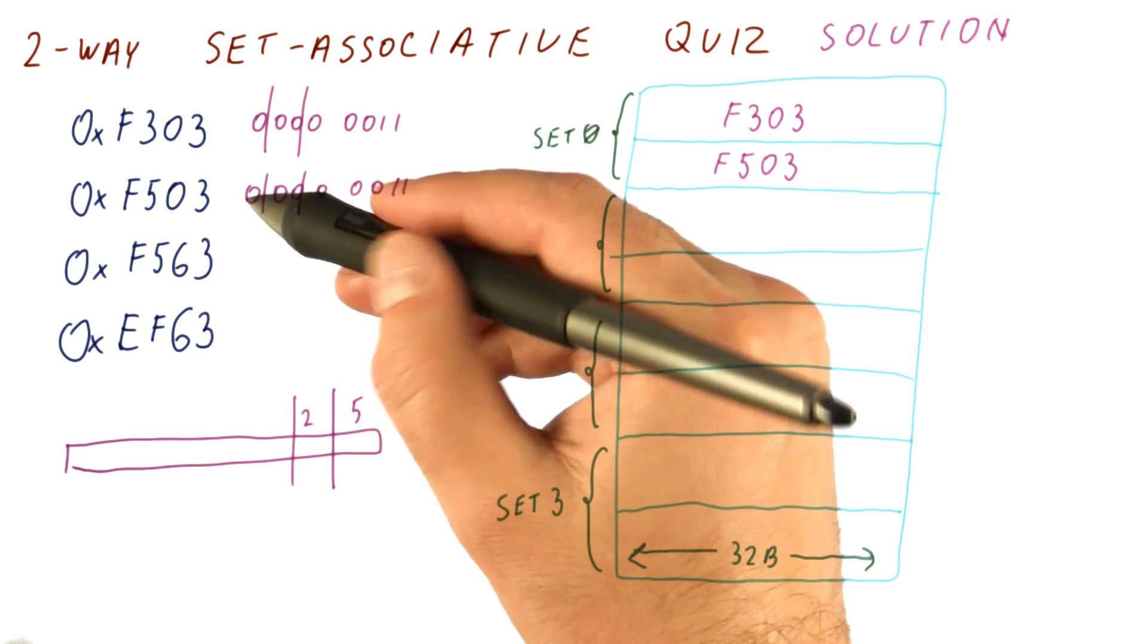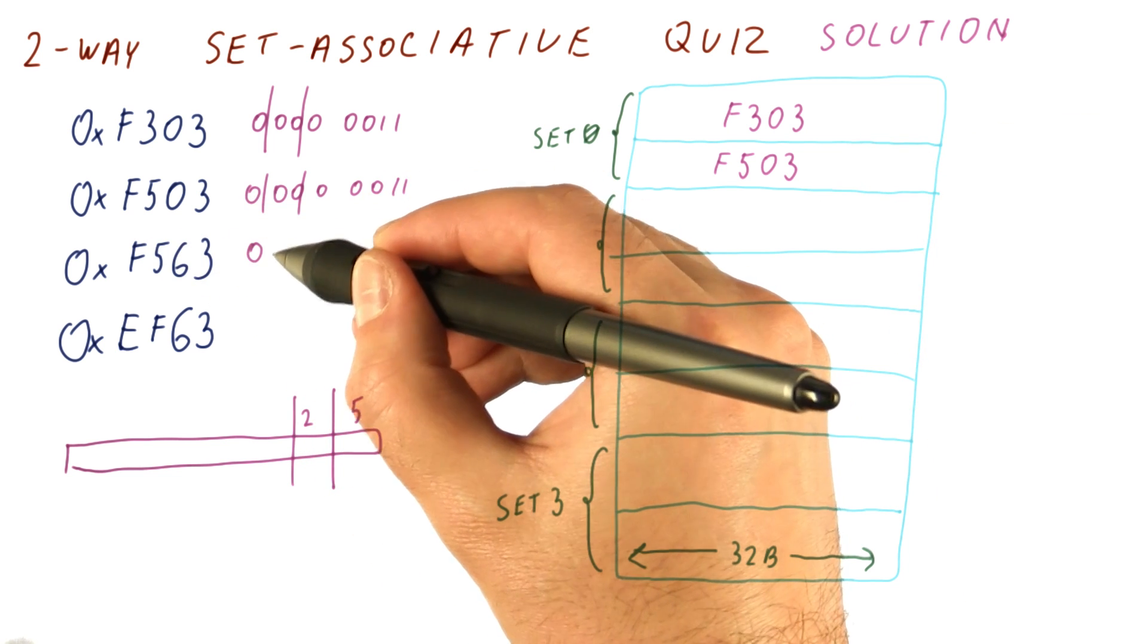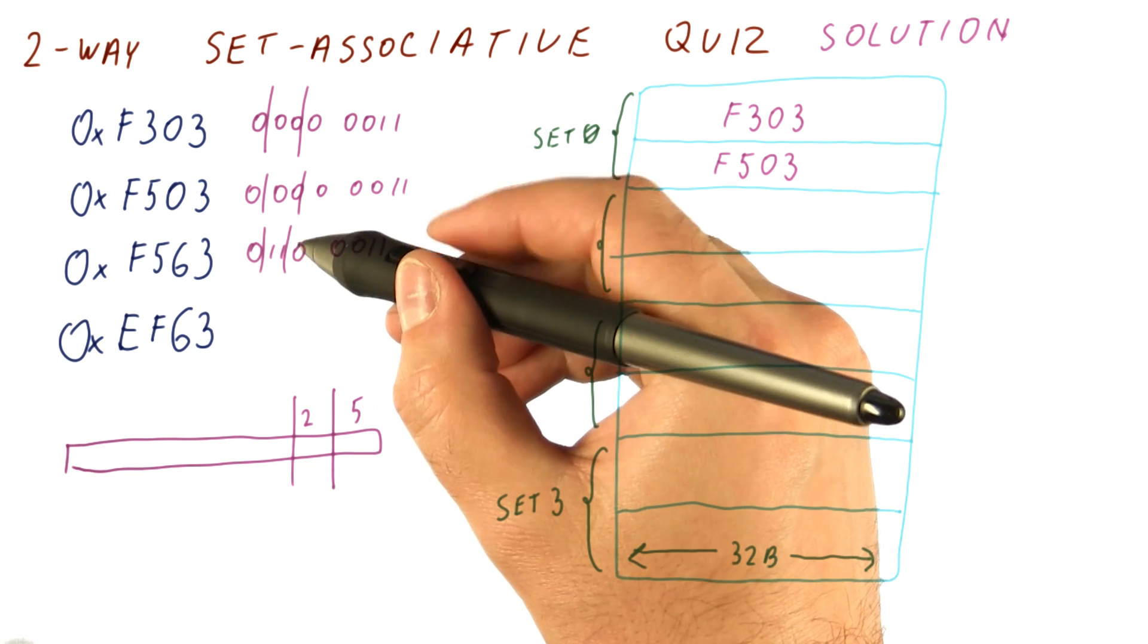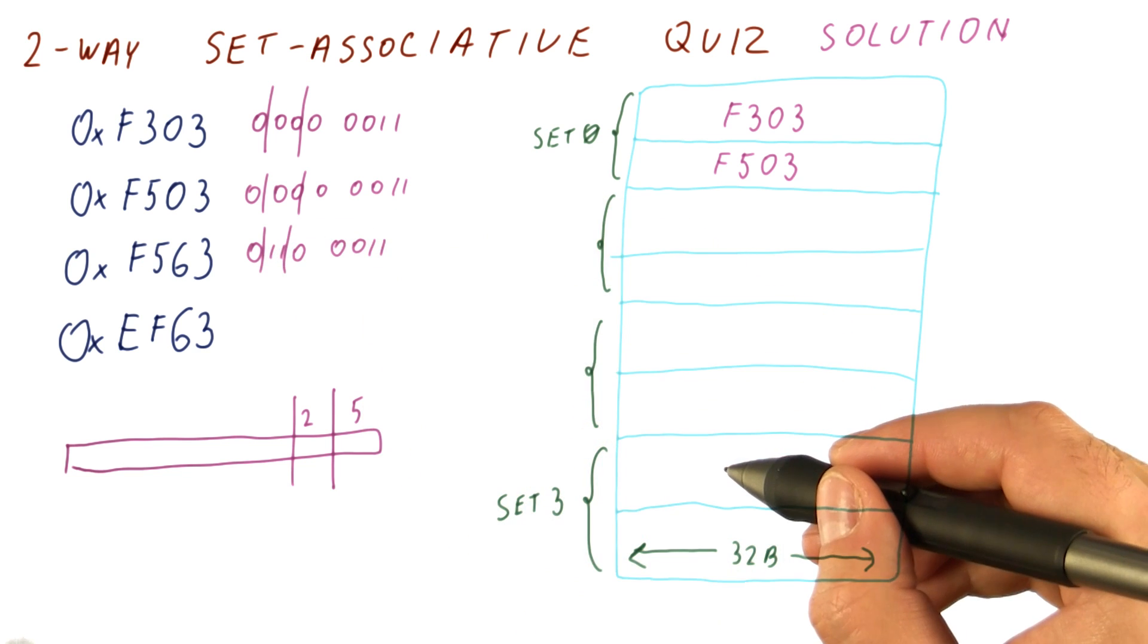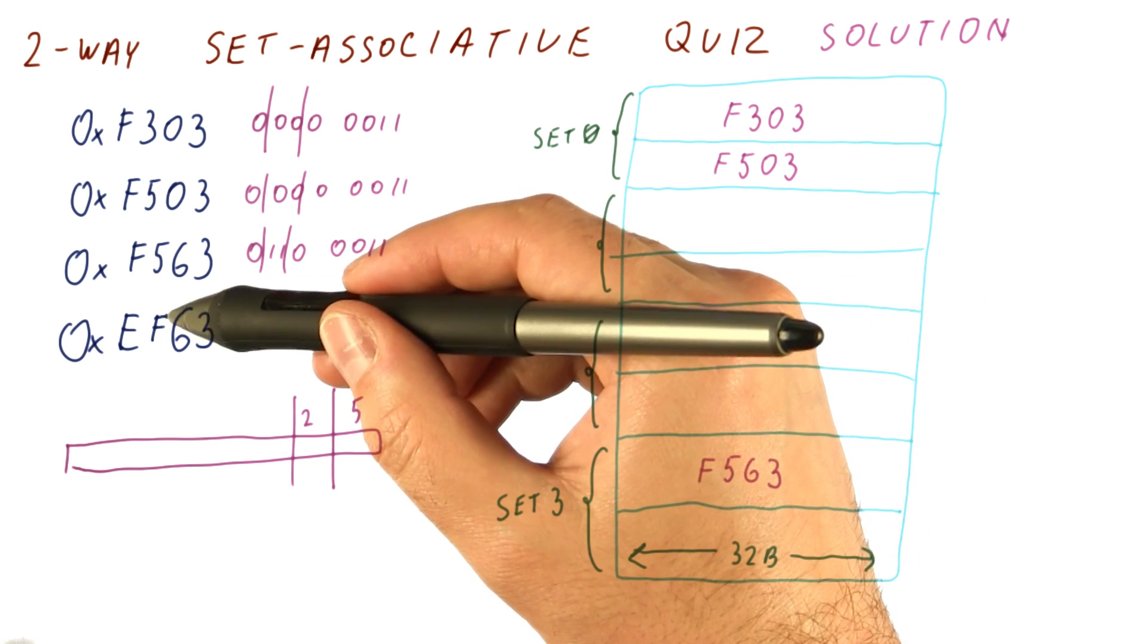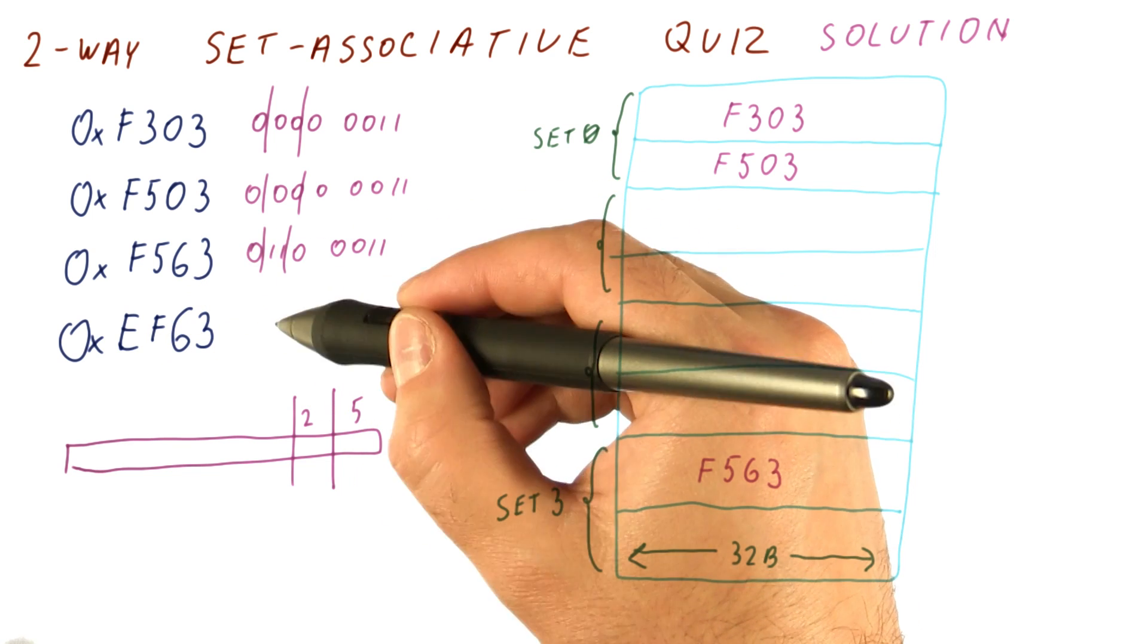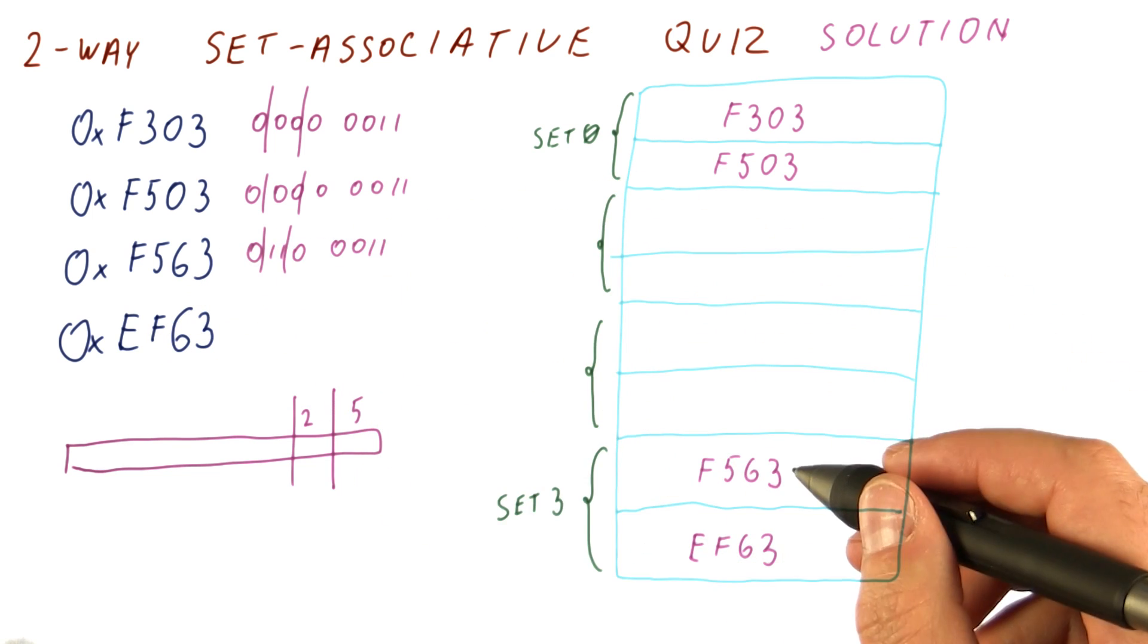Next we have F563, six three like this. This maps to set number three. And finally, EF63 is going to map to the same set, and we'll put it here.